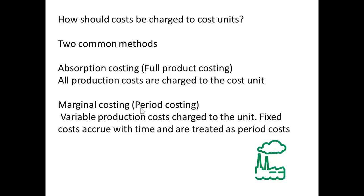So how do we charge costs to cost units? We'll go into this in more detail in another podcast, but suffice to say there are two methods. Absorption costing, or full product costing, is where we take all the production costs and charge them to the cost unit. Or marginal costing, which is period costing — in this case the variable production costs are charged to the unit because they vary with the amount produced, but the fixed costs accrue with time and are treated as period costs.